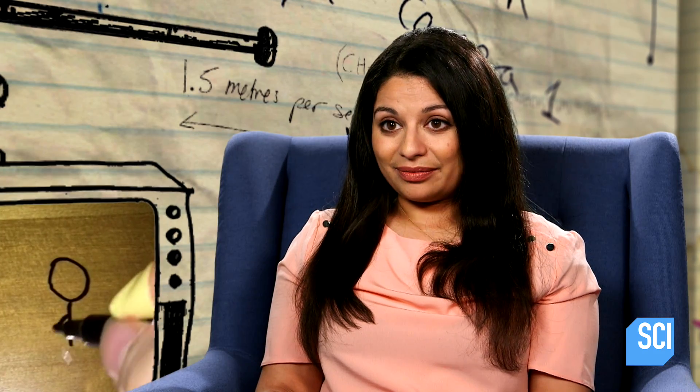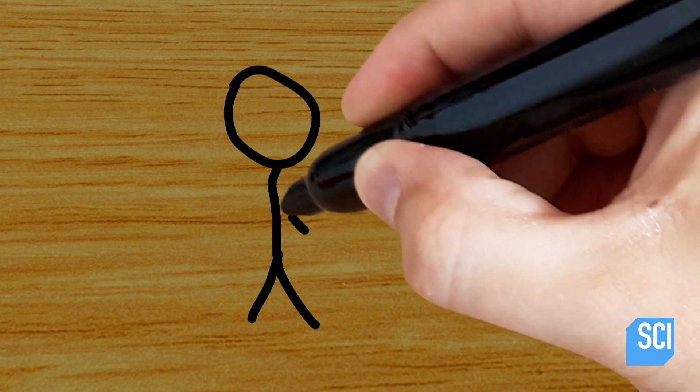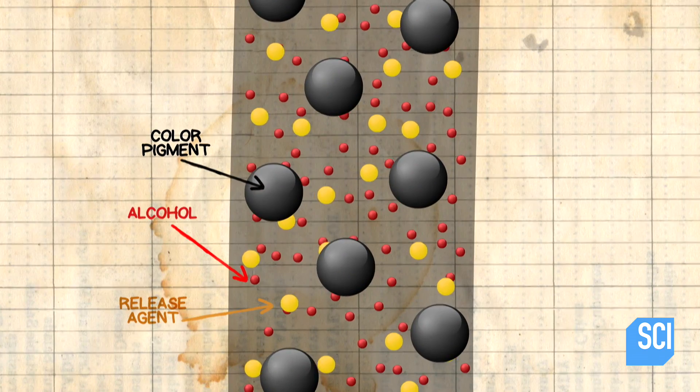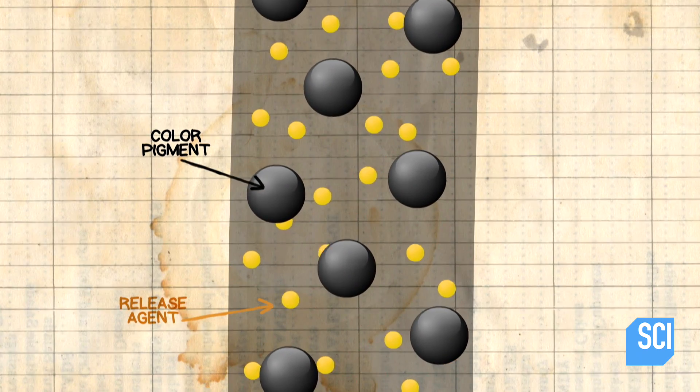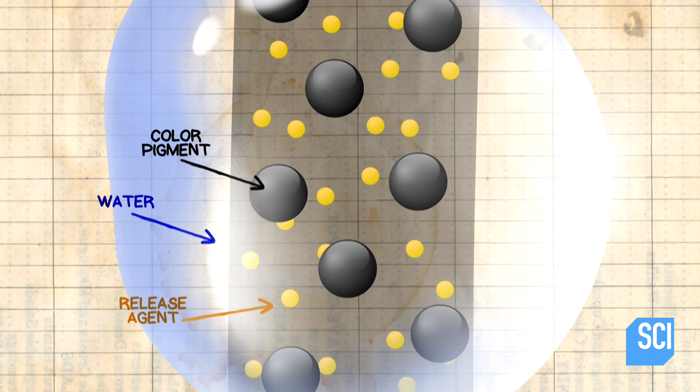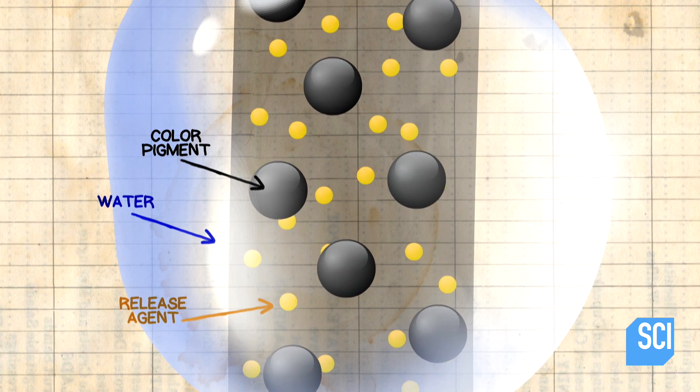When you use a dry white marker, the alcohol in the ink quickly evaporates off, leaving behind the release agent and the colour pigments. When water is added, these don't re-dissolve into the water and the ink is able to hold its shape.